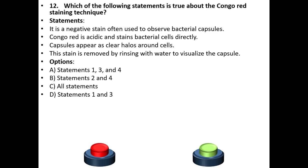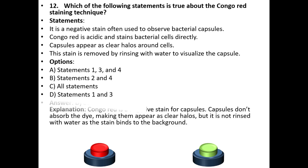The answer is D: statements 1 and 3. Explanation: Congo red is a negative stain for capsules. Capsules do not absorb the dye, making them appear as clear halos, but the stain is not rinsed with water as it binds to the background.